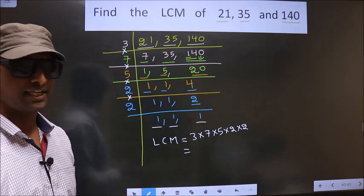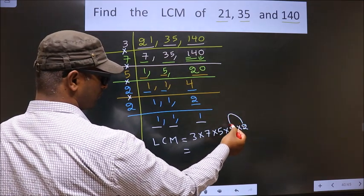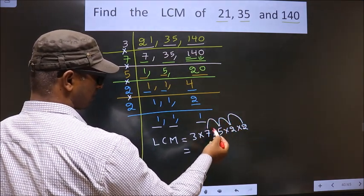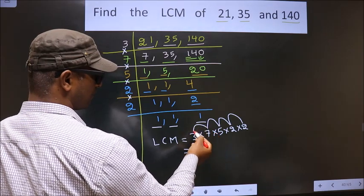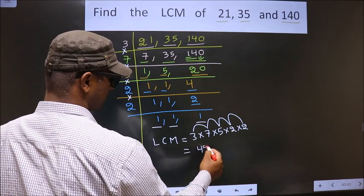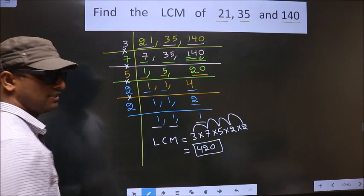Okay. So let us multiply. That is 2 times 2, 4. 4 times 5, 20. 20 times 7, 140. 140 times 3. 14 times 3 is 42. 0 as it is you write. So this is our LCM.